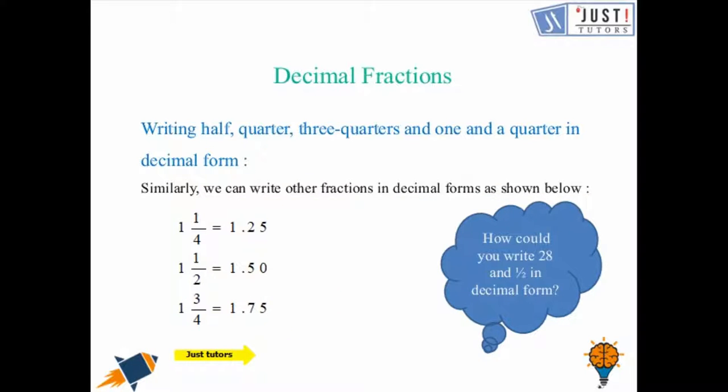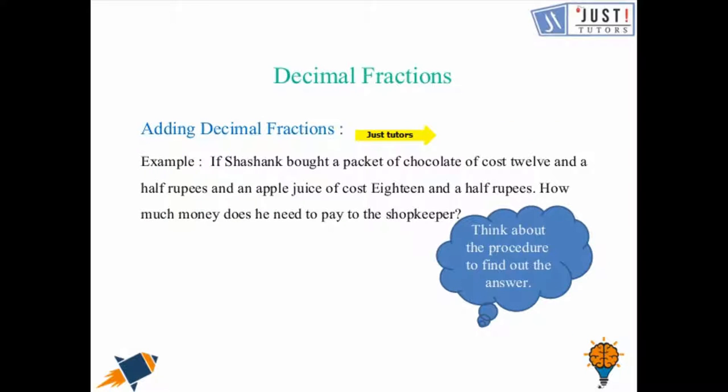Now, here we will proceed with mixed numbers. It says 1 whole and 1 quarter. As previously learnt we know that 1 quarter is 0.25 and we will put this one here before the decimal point. So 1 whole and 1 quarter became 1.25. In similar ways you can try both the questions. It's asking how could you write 28 and half in decimal form. We will write 28 point, and as we know that half is 0.50, here we have 28.50.